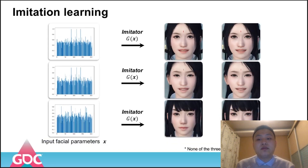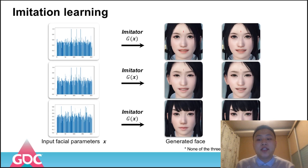Here are some pairs rendered by the imitator and the game engine with the same facial parameters. Can you guess which column is the ground truth? The right column is the ground truth. Indeed, it is quite difficult to tell the differences, which means we can imitate the game engine very well and replace it, even when the training data is generated randomly.